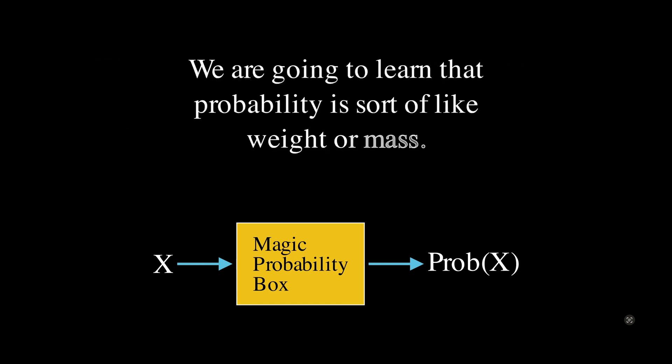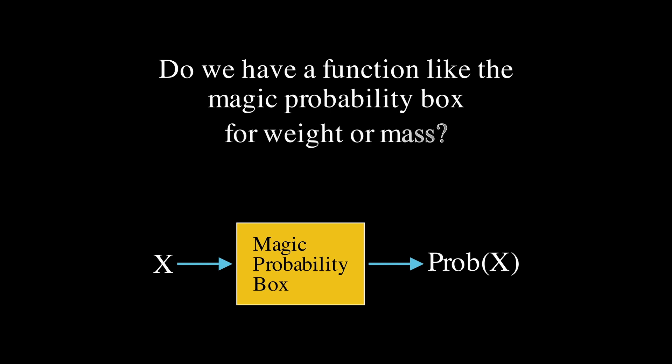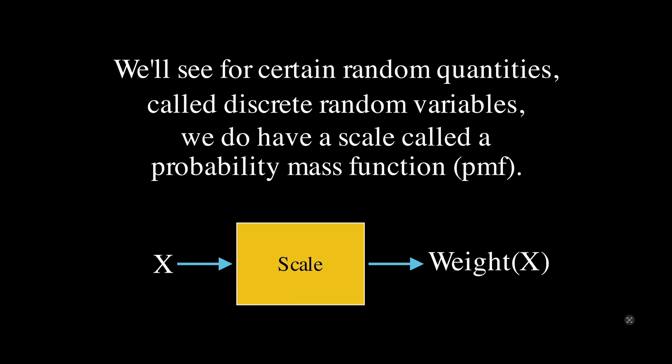We are going to learn that probability is sort of like weight or mass. Do we have a function like the magic probability box for weight or mass? A function that inputs an object X and outputs its weight? Well, we do — we call that a scale. And we'll see that for certain random quantities called discrete random variables, we do have a scale called a probability mass function.